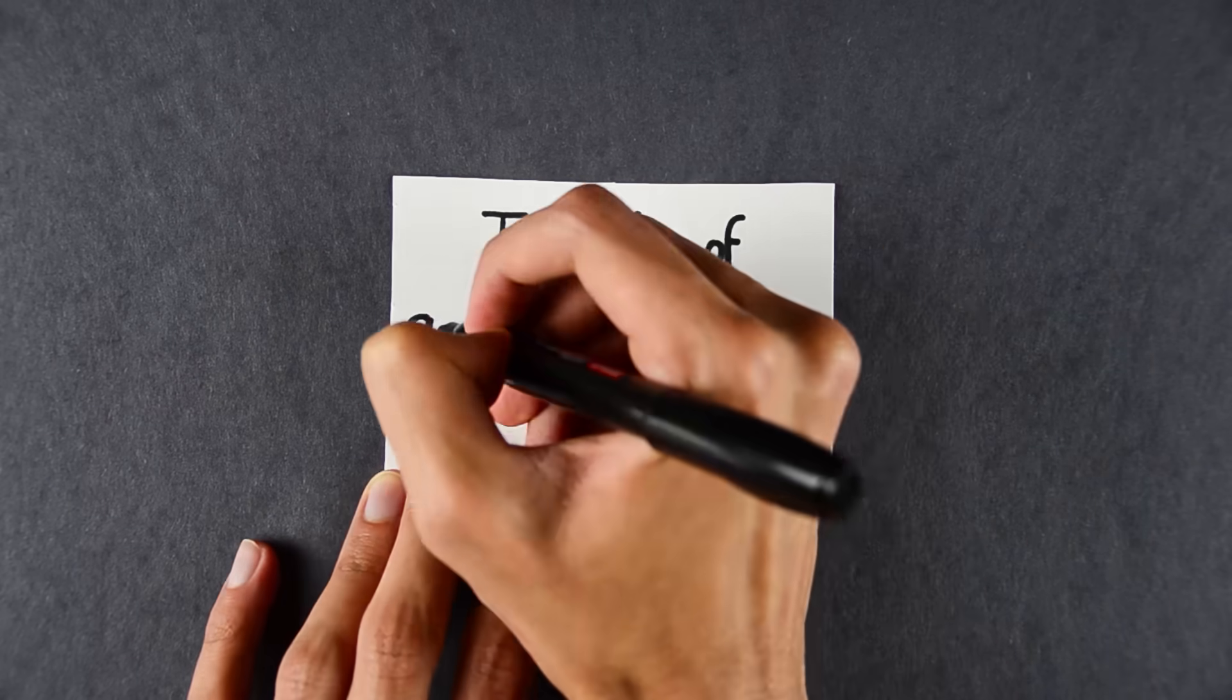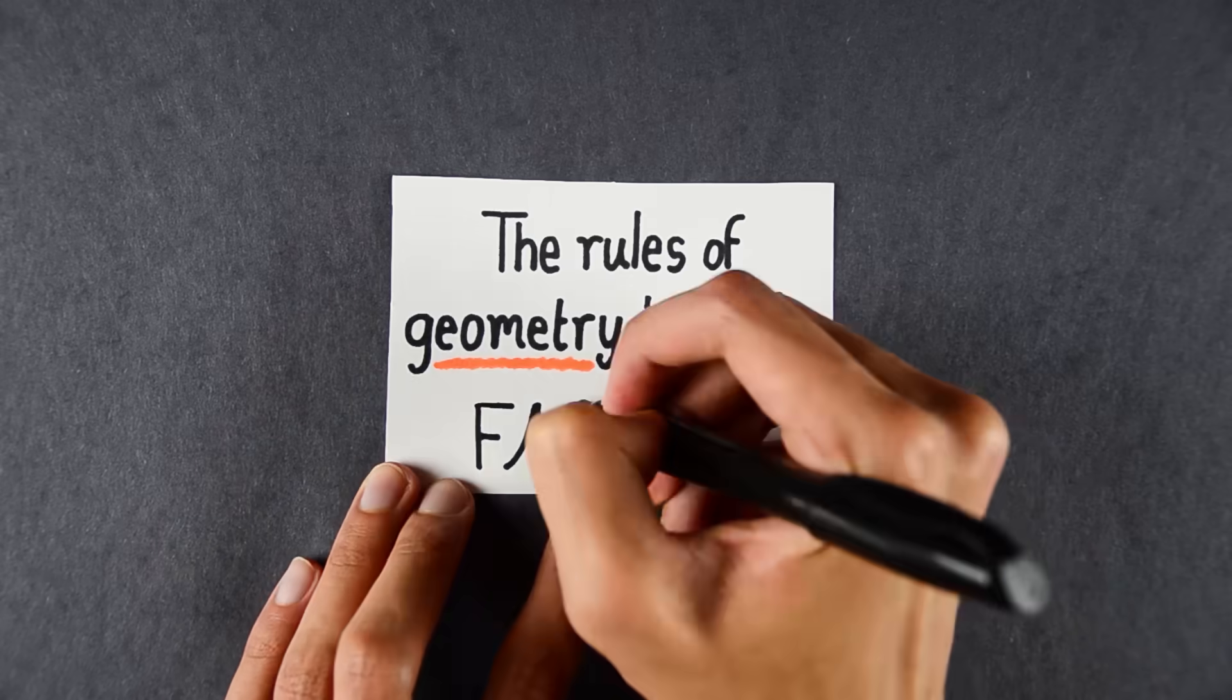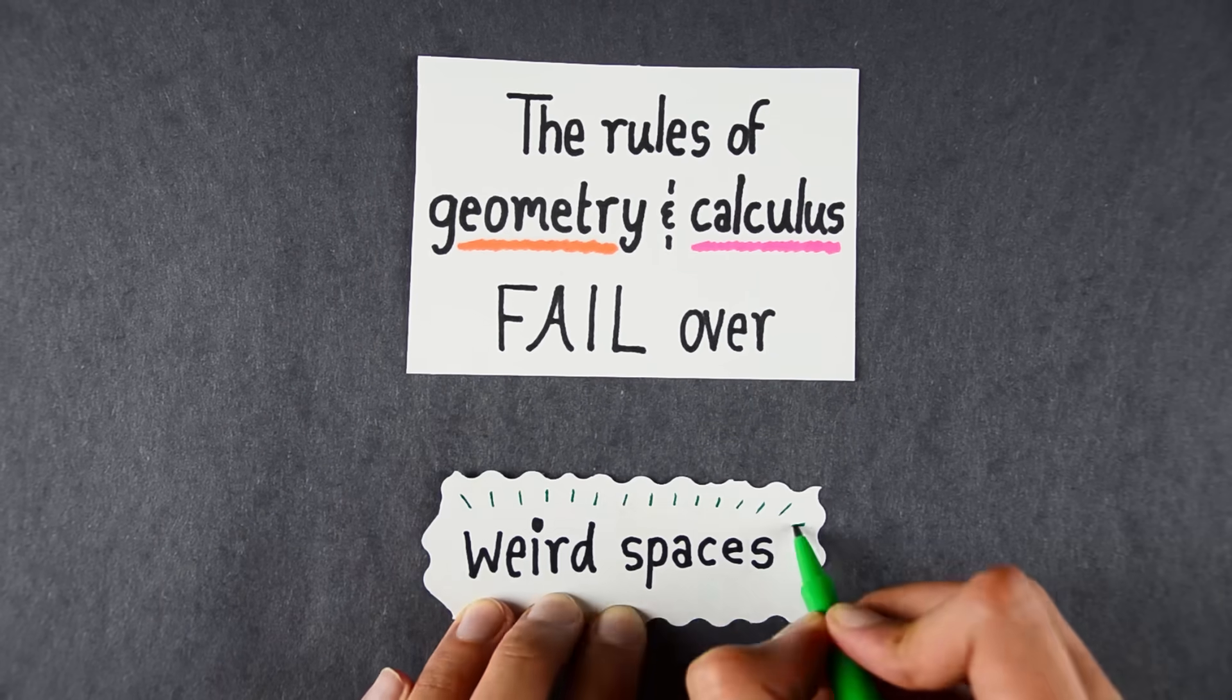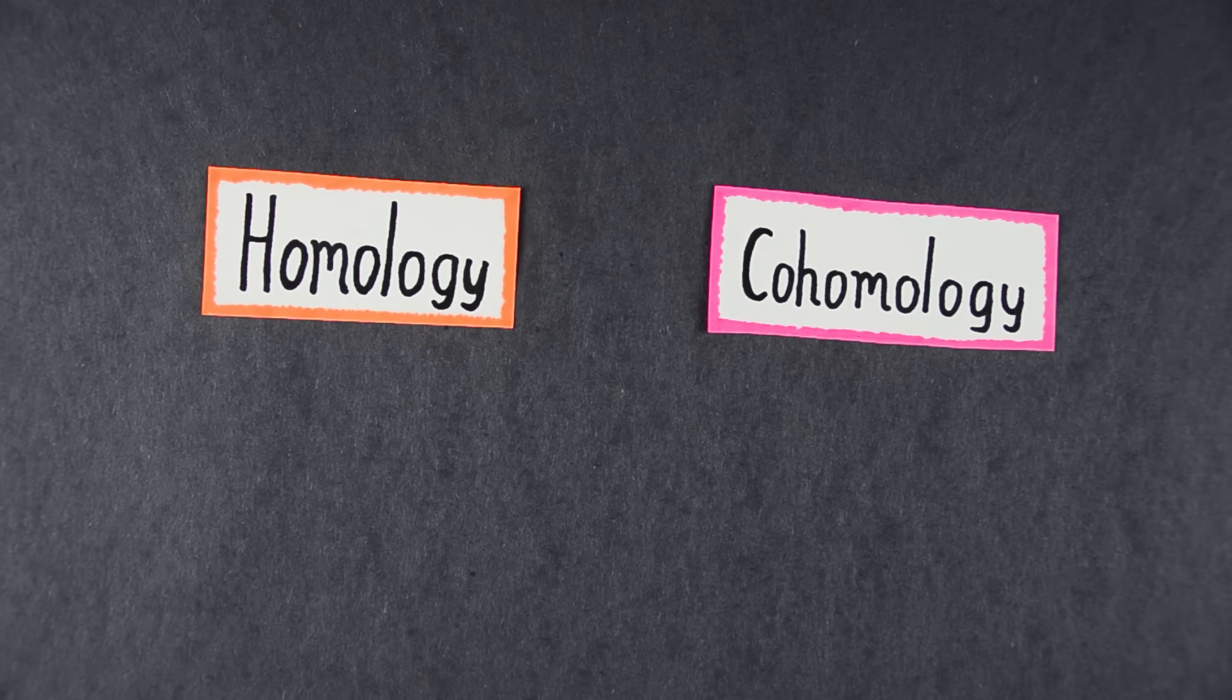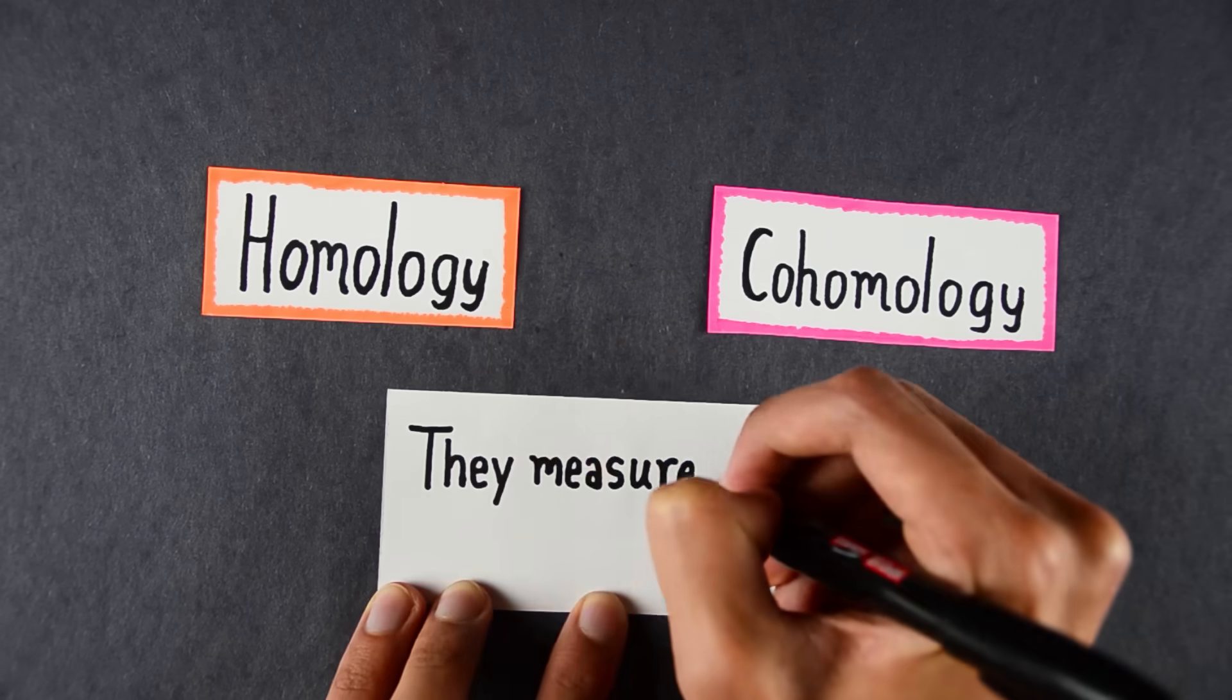The essence of the video is as follows. The rules of geometry and calculus fail over weird spaces. And the extent to which they fail measures the number of holes in your space. For geometry, this is called homology. For calculus, it's called cohomology. And the surprising fact is that they measure the same holes.